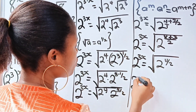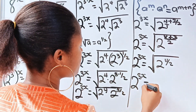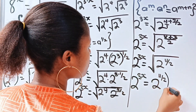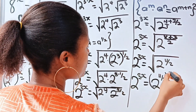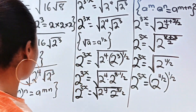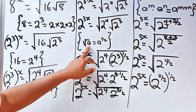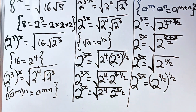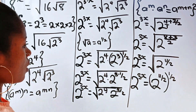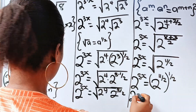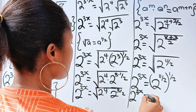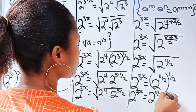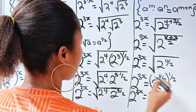So we have 2 to the power of 3x is equal to 2 to the power of 11 over 2, raised to the power of half. Remember that the square root of a is equal to a to the power of half, so we write this as 2 to the power of 3x is equal to 2 to the power of 11 over 2 multiplied by half.